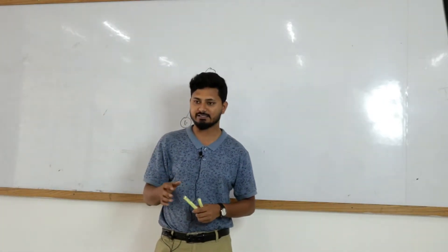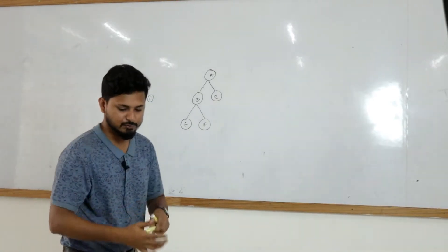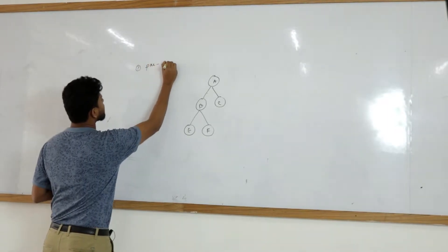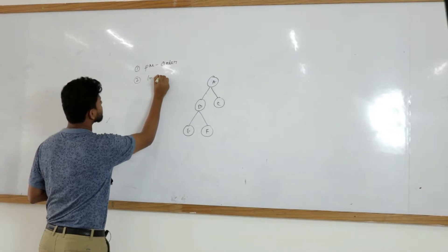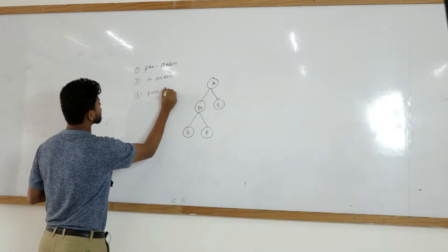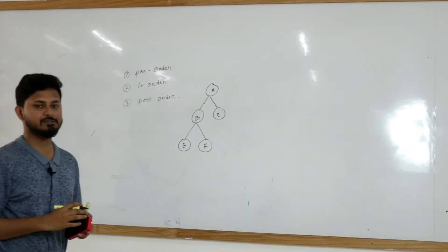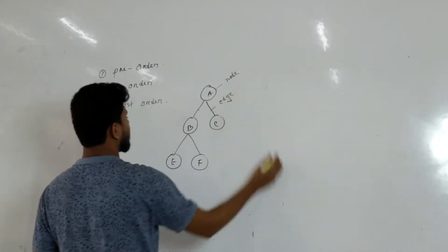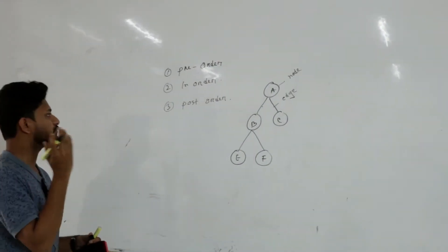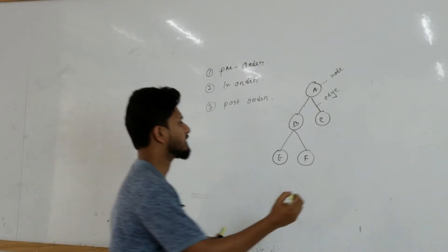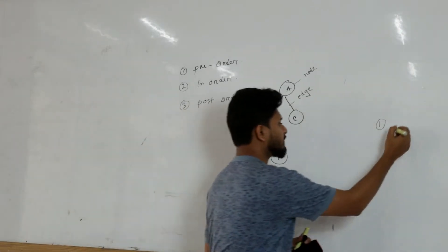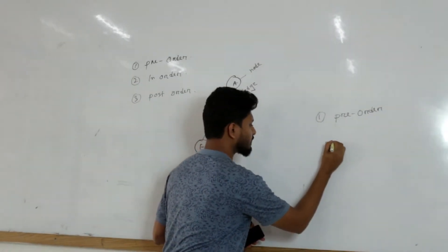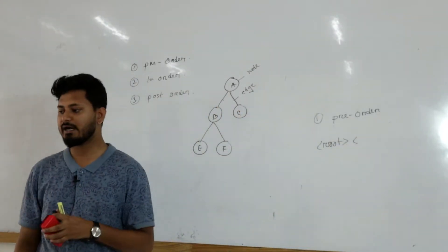In this class we are going to discuss about tree traversal. In tree traversal there are three procedures: number one is pre-order, number two is in-order, and number three is post-order. We are going to learn these three tree traversal procedures. For pre-order, the algorithm is: first comes the root, then left, and then right.